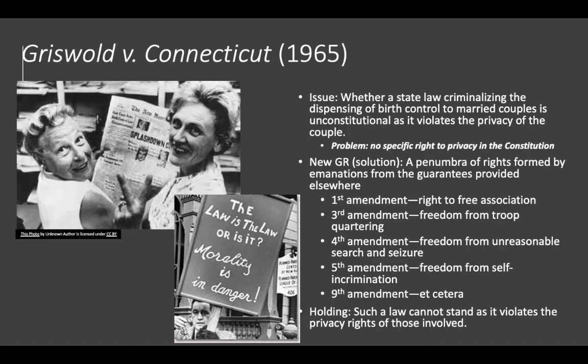The court looks at this and finds that there are embedded in the Constitution indications that there is a general right to privacy. The right to privacy is not one specific right in the Constitution, but rather a penumbra of rights formed by what they call emanations from the guarantees provided elsewhere. The court talks about the First Amendment right to free association, the Third Amendment right to be free from quartering troops, the Fourth Amendment right to be free from unreasonable search and seizures, the Fifth Amendment right to be free from self-incrimination, and the Ninth Amendment, which says all of the rights captured in the Bill of Rights are not all-inclusive — there are rights beyond this. Given all of this, the court says it is clear that the Founders intended a right to privacy to exist.